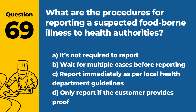Question 69. What are the procedures for reporting a suspected foodborne illness to health authorities? a. It's not required to report. b. Wait for multiple cases before reporting. c. Report immediately as per local health department guidelines. d. Only report if the customer provides proof. Answer c. Report immediately as per local health department guidelines. In the event of a suspected foodborne illness, it is important to report it immediately to the local health department, following their specific guidelines.